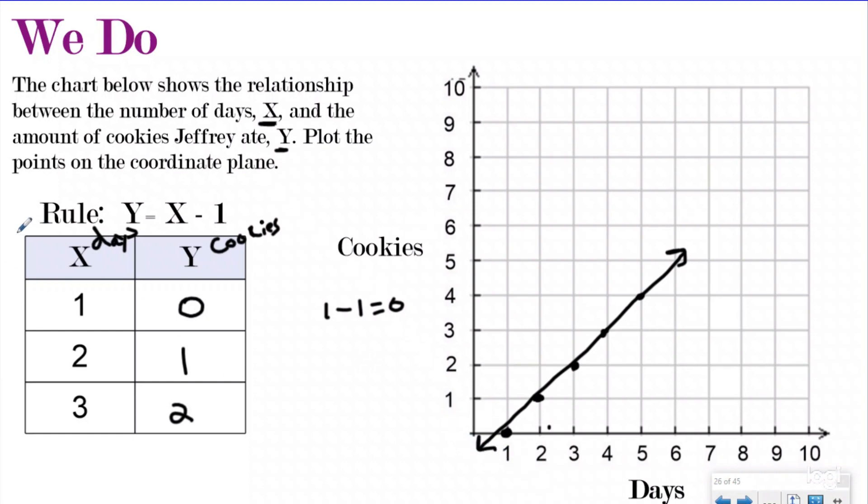So that's one way they tried to disguise these easy questions is by giving you a lot of words up here to try to confuse you and telling you different things. But really, all they did was they told us, okay, X is going to be days, Y is going to be cookies. So on the first day, he ate zero cookies. On the second day, he ate one cookie. On the third day, he ate two cookies, right? We just followed our rule to help us fill in our pattern chart.